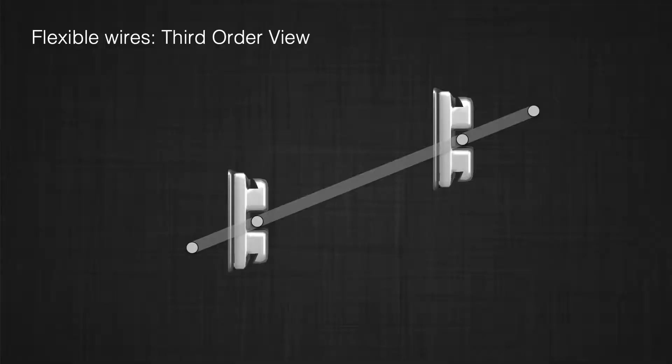Now, twist your system and look at it from the side. What happens if we have a round wire or rectangular wire and these two brackets are completely aligned? If the brackets are completely aligned, you would say a round or rectangular wire in the third order should not produce any additional moments or forces in the system. And you're right.